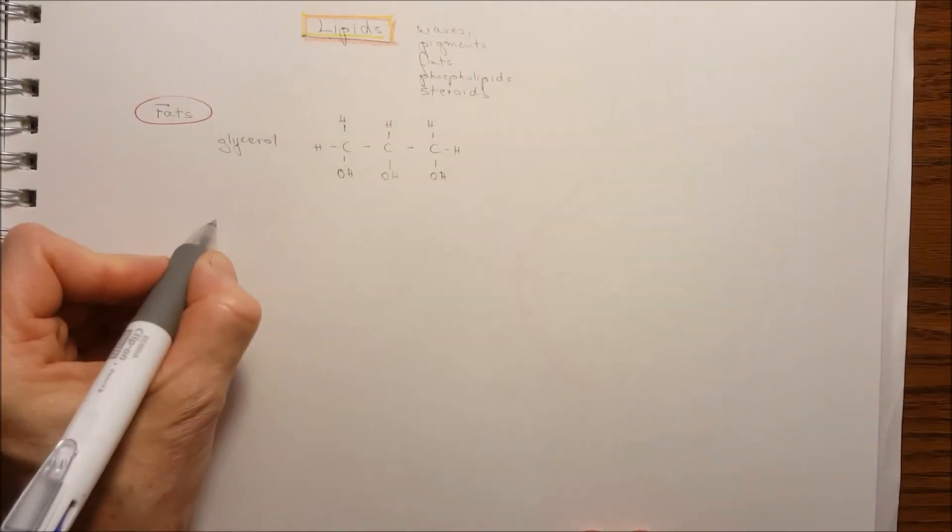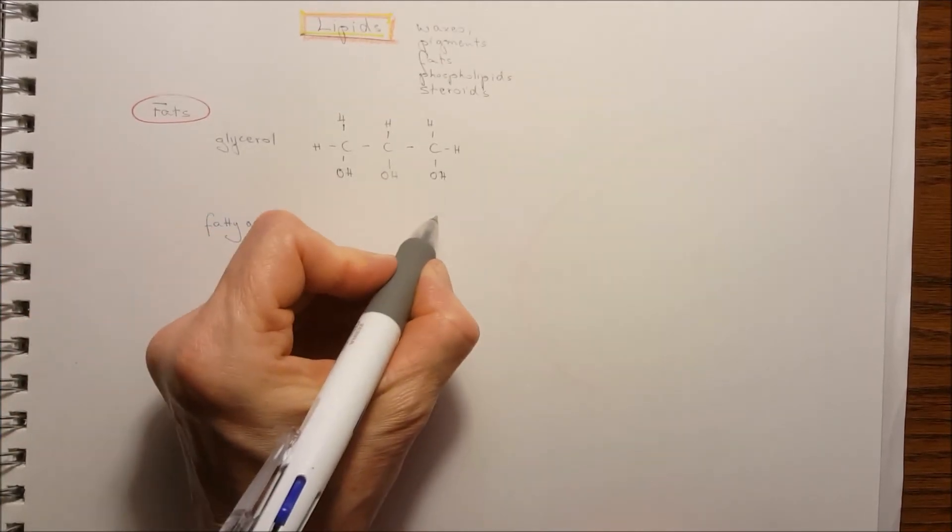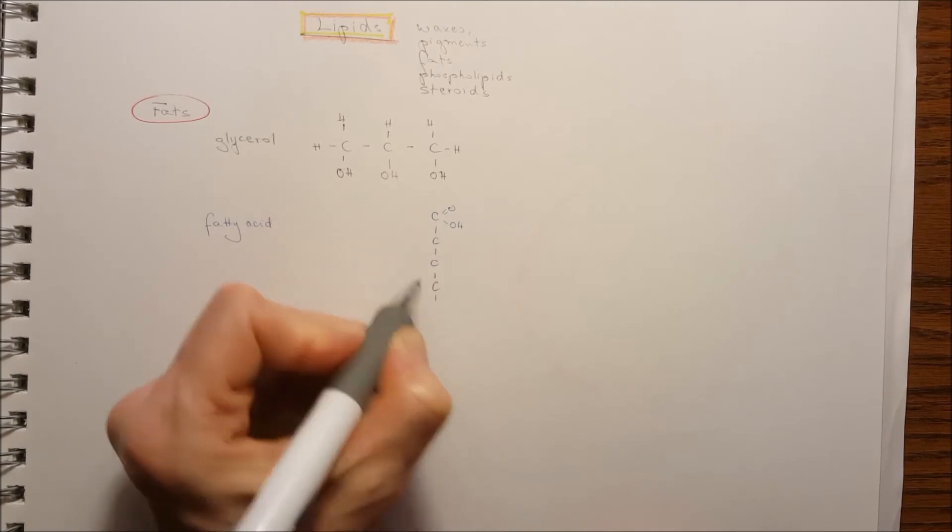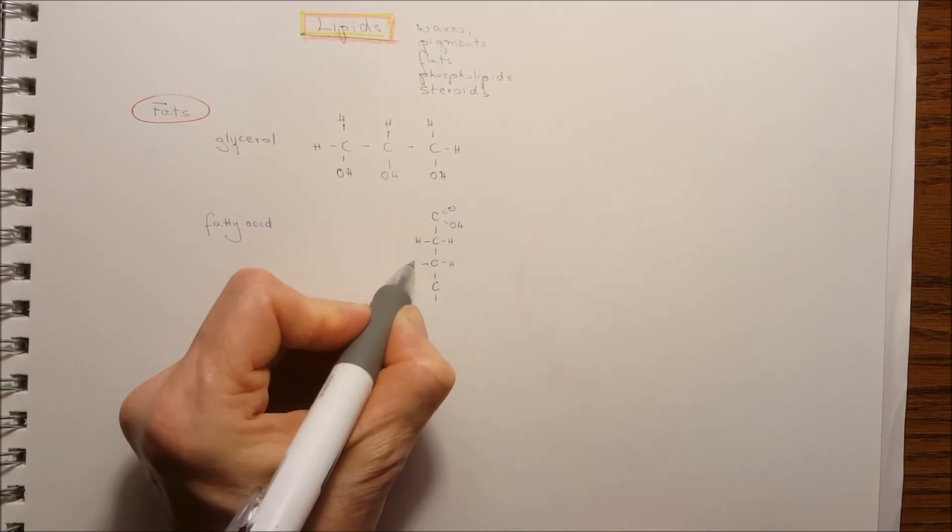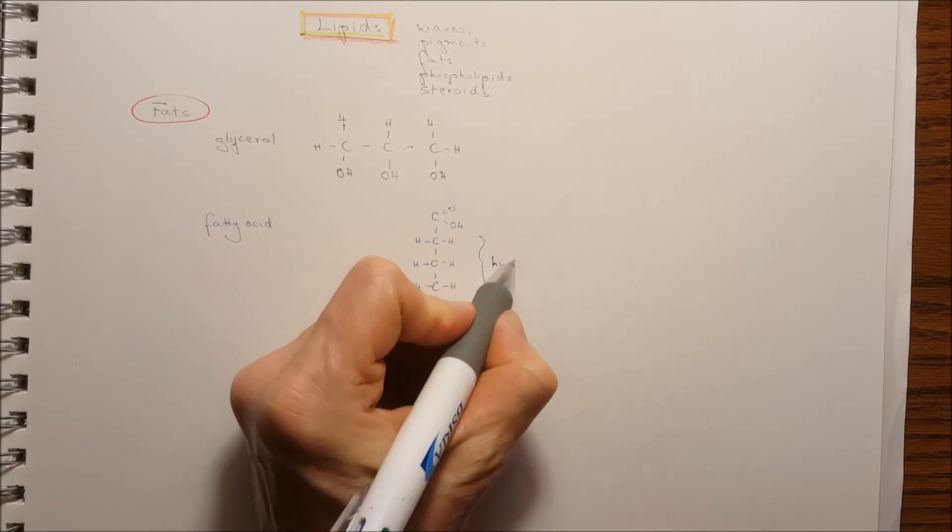And they are going to form ester bonds, covalent bond with fatty acids. Fatty acid, it looks like kind of a long chain. It contains a carboxyl group for the first carbon and hydrogen all around.